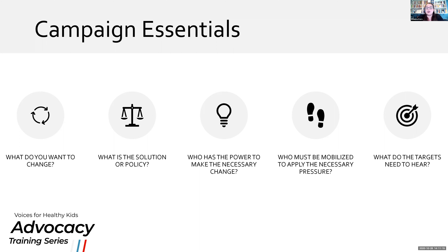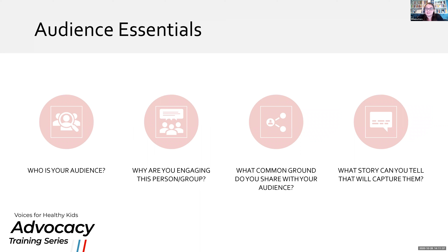Those community management questions are derived from your campaign essentials — what is the solution or policy we're looking for, what do we want to change, and what will our community management approach do to move our campaign forward? We also need to think about audience essentials: we know our power players and what we want to change, but we have to think about why we want to build a community and who it is.